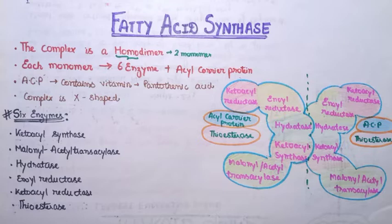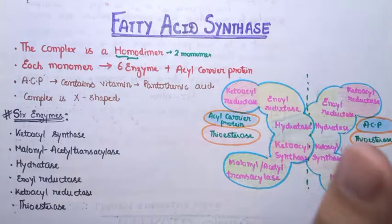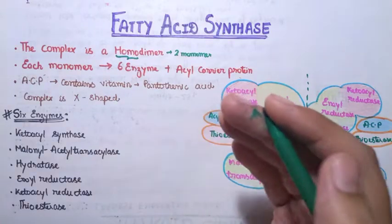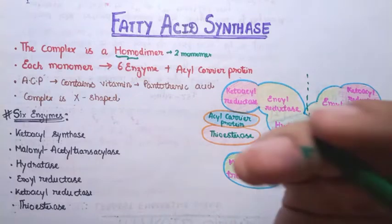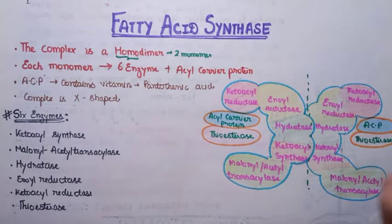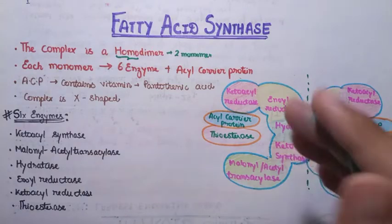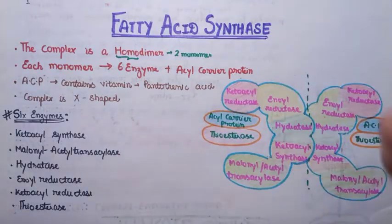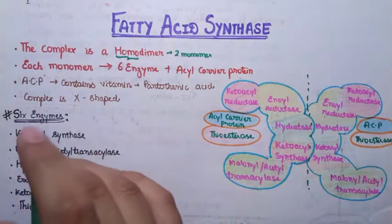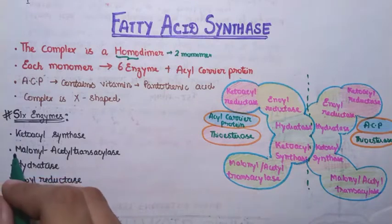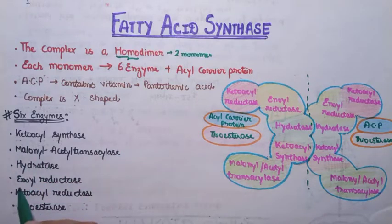The acyl carrier protein contains a vitamin — pantothenic acid. We will study pantothenic acid in detail in the vitamin section, but for now you should remember that ACP contains pantothenic acid. The complex is X-shaped: if you perform X-ray crystallography of this enzyme, you will find that the enzyme is arranged in an X-shaped manner. Many books use a simplified diagram that is not usually X-shaped, but you should remember the complex is X-shaped.